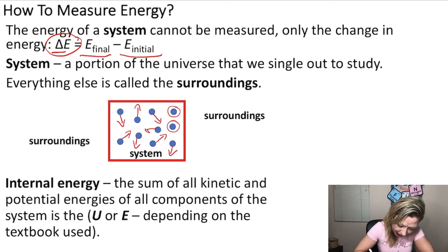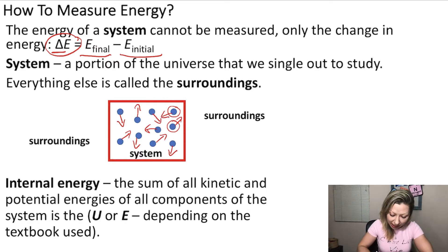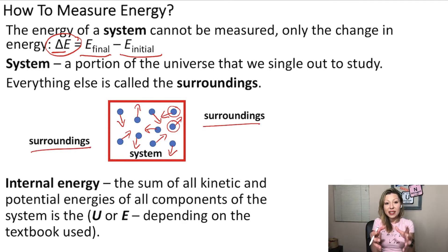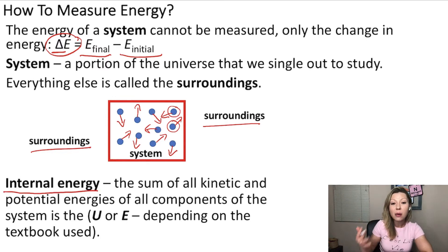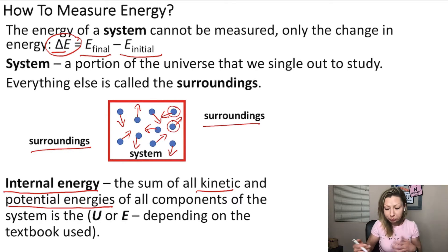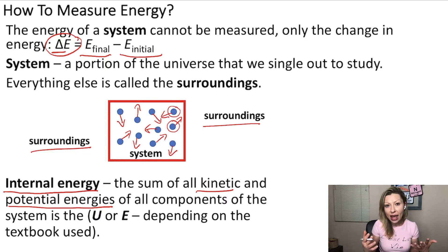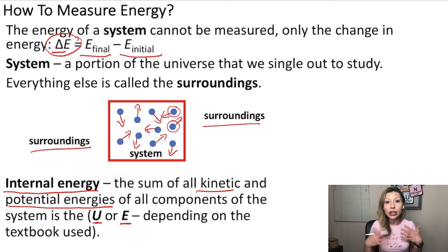So they have a defined kinetic energy. Everything else around our system is called the surroundings. So the system is the portion of the universe we are studying and the surroundings is everything else. What's really important is the internal energy of the system. This is the sum of all kinetic and potential energies of all components of the system. Depending on your textbook, you are going to see internal energy defined with a capital U or a capital E. In this video, I'm going to use capital E to define the internal energy.